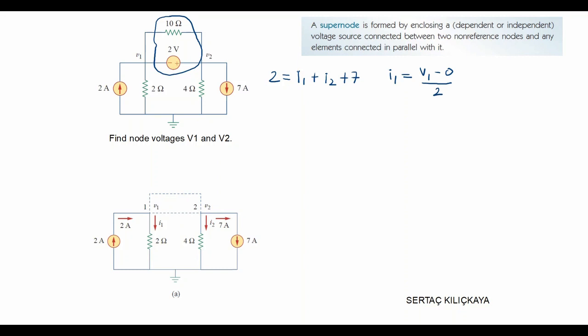You can also see from there, this node is V1 and this node is at ground potential and the resistor in between them is 2 ohms. And we can also write I2 as V2 minus 0 over 4 ohms. We wrote this equation from the 4 ohm resistor in between two nodes, here ground potential.